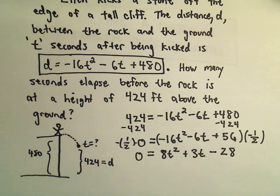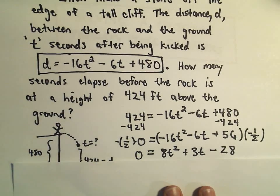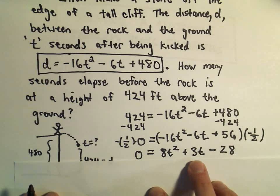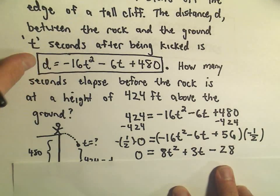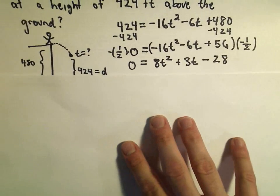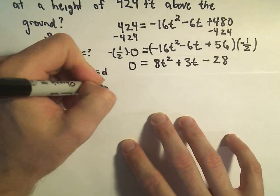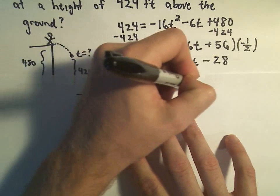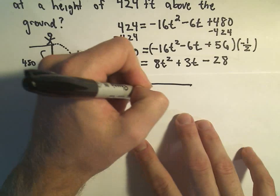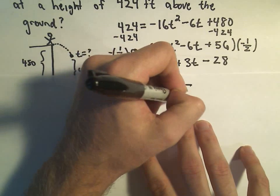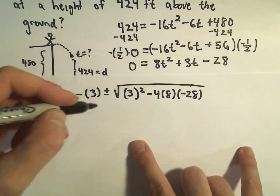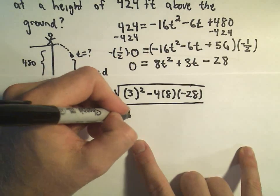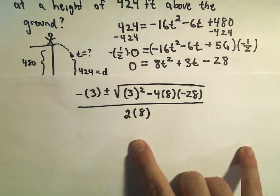Maybe this thing still factors nicely, I'm not positive if it does. I think what I'm going to do is just go ahead and use the quadratic formula. So a is the value positive 8, b is the value positive 3, c is going to have the value negative 28, so in the quadratic formula, we'll get negative b plus or minus the square root of b squared minus 4 times a times c, all divided by 2 times a, which is 8.